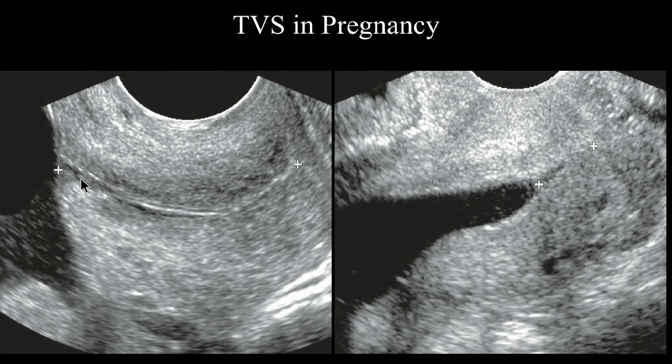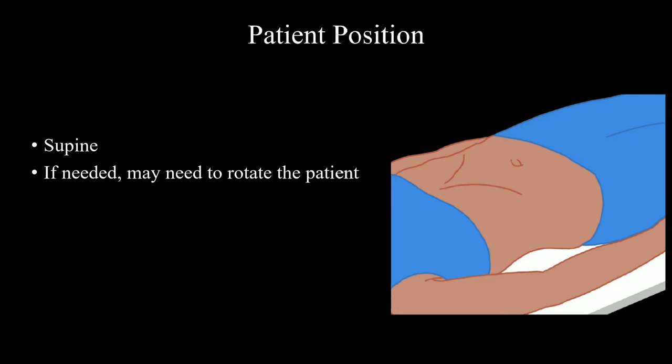Here on the left, you can see a normal cervix on TVS. The cervical canal looks good. But on the right, you can see a narrow canal with V-shaped or Y-shaped indentation of the sac into the canal. It suggests cervical incompetence. We will talk more about cervical incompetence on a separate video.